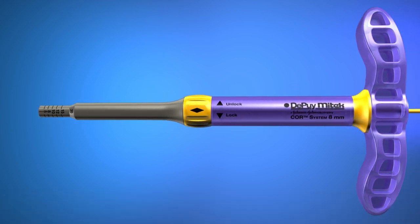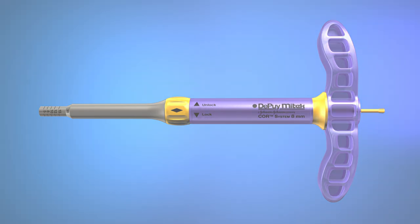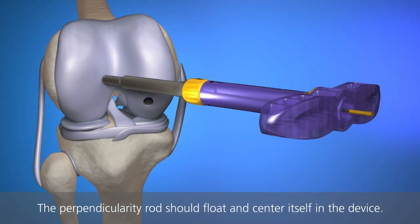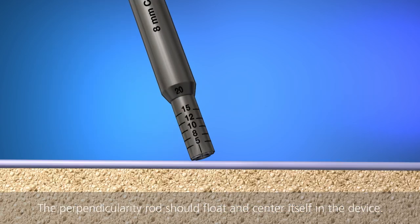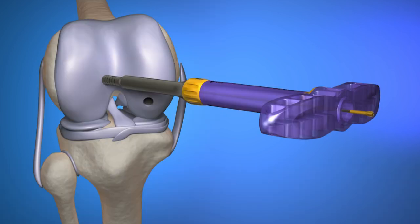Attach the rod cap to the proximal end of the perpendicularity rod. Use of the rod cap is optional at this point. Position the harvester guide or cutter on the selected non-weight-bearing surface to harvest the graft. Remain perpendicular by maintaining pressure and centering guide cutter. Remove the perpendicularity rod by turning it counterclockwise until it disengages from the guide cutter.